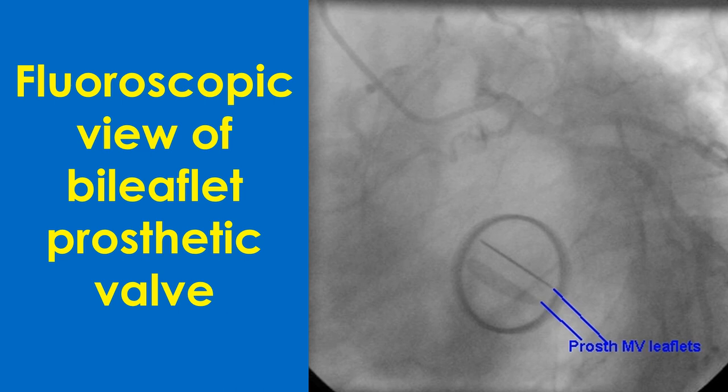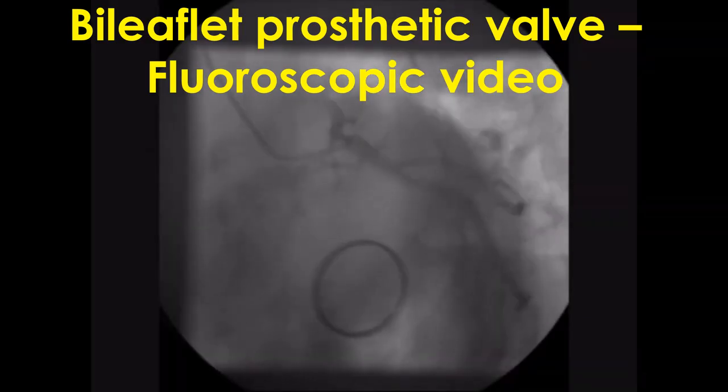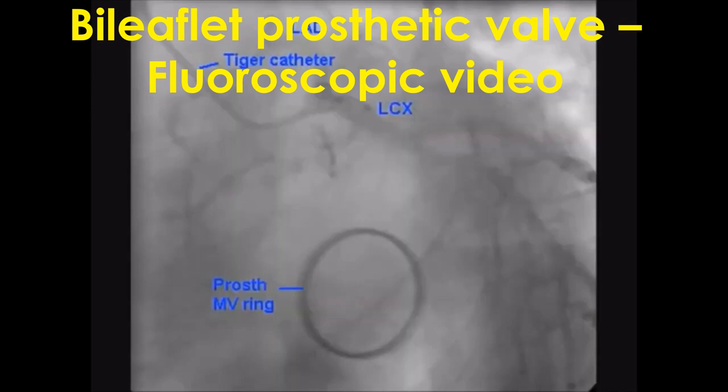A fluoroscopic view of a bi-leaflet mitral valve is shown with leaflets in the open position. St. Jude Medical and Carbomedics bi-leaflet valves have slightly different characteristics but both have similar clinical performances. Medtronic Hall is a single-leaflet valve. Onyx is a newer bi-leaflet valve approved for lesser Warfarin requirements in aortic position. The image shows the opening and closing of the mitral leaflets, with the ring of the prosthetic mitral valve clearly visible.